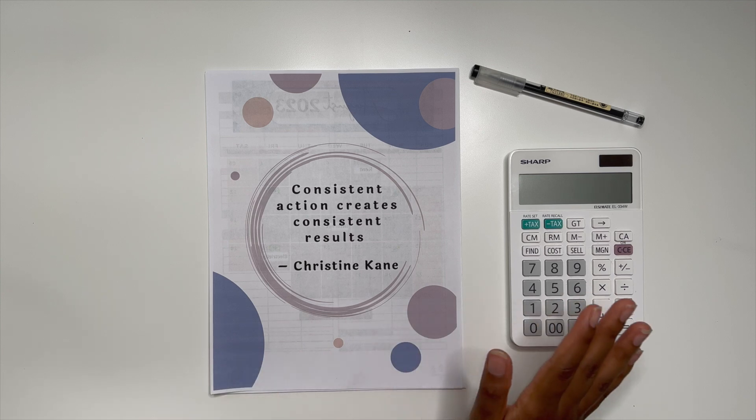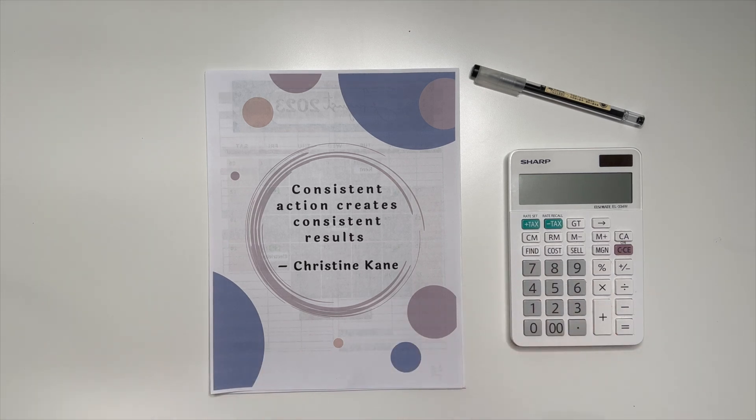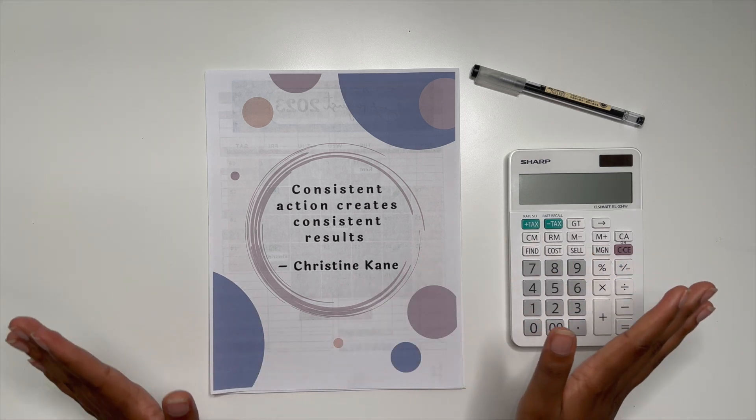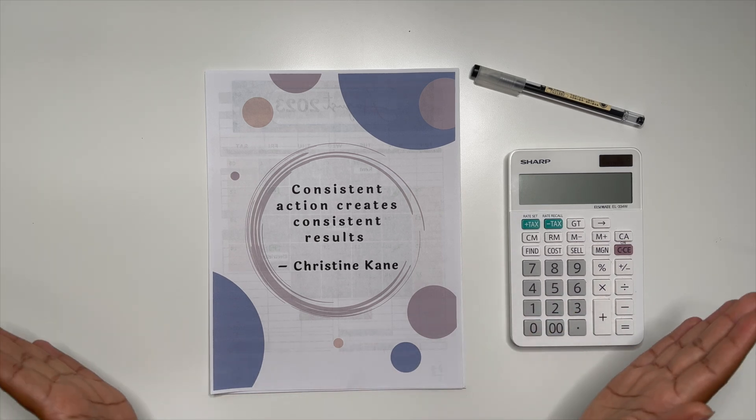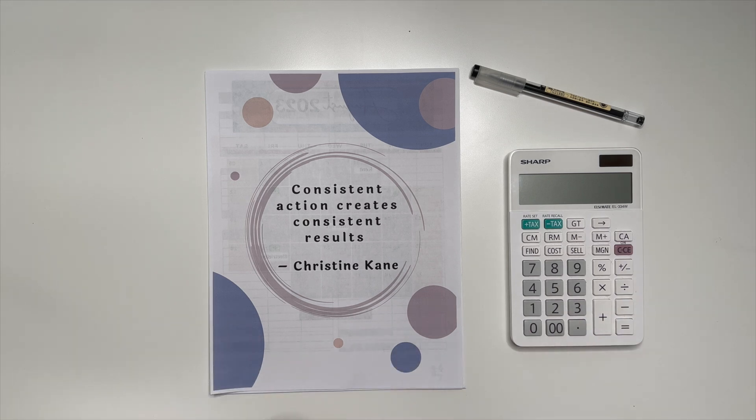So each month I have a new little quote and for the month of August I have consistent action creates consistent results. So that is very prevalent to what I am trying to do this month. My word is consistency. I am trying to get back on track and just be consistent when it comes to my budgeting, when it comes to my personal life, my job. I am just trying to focus on consistency because the past month has just been unexpected after unexpected but such is life.